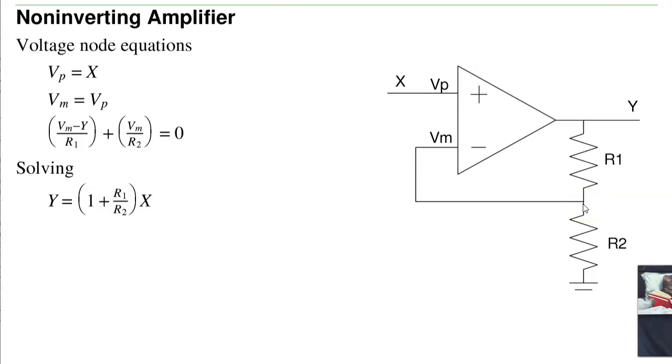Or another way to think of it, this is a voltage divider. I know that V plus equals V minus. This signal right here, I know from voltage division, X is going to be R2 over R1 plus R2 times Y. So solving backwards, Y is equal to R1 plus R2 over R2 times X.